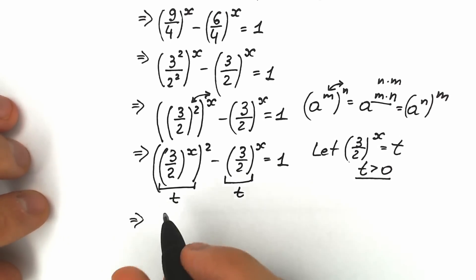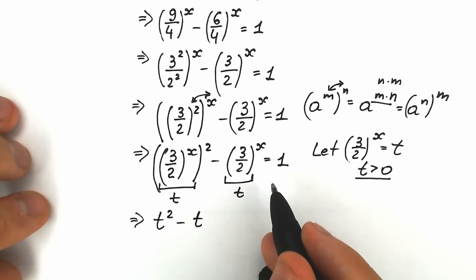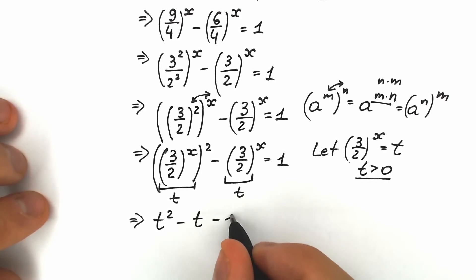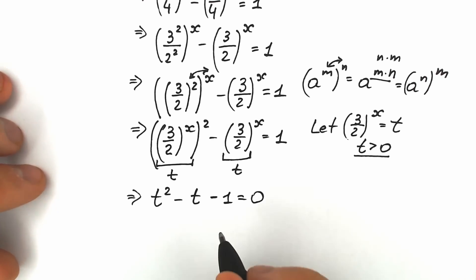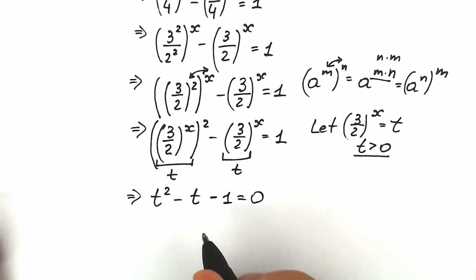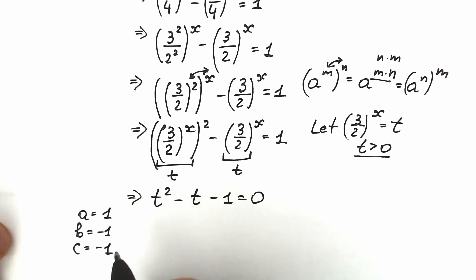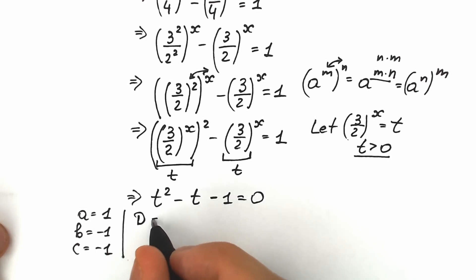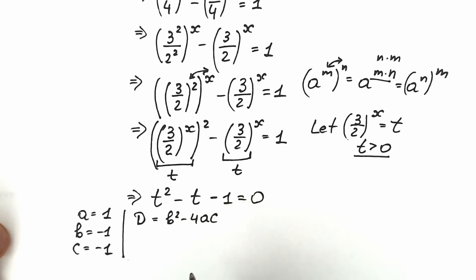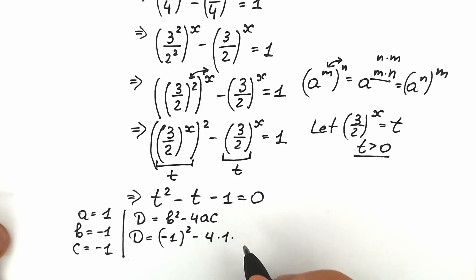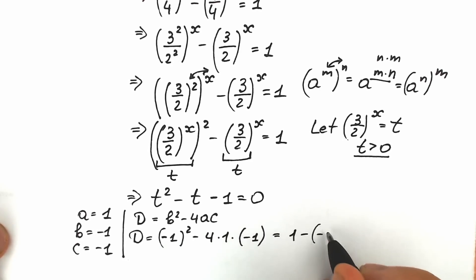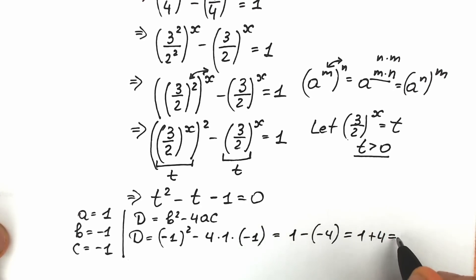So we have t squared minus t minus 1 equal to 0. Let's find the roots. Here a equals 1, b equals minus 1, and c equals minus 1. Let's compute the discriminant: b squared minus 4ac equals (minus 1) squared minus 4 times 1 times (minus 1), which equals 1 plus 4, equal to 5.